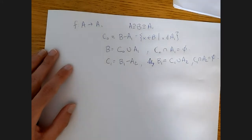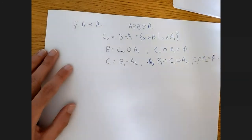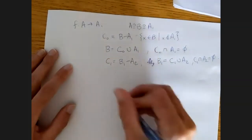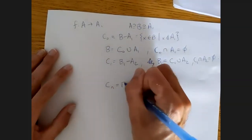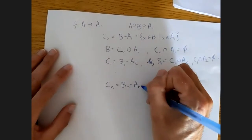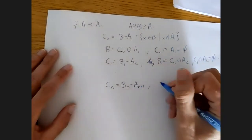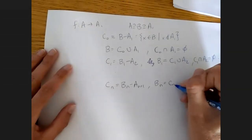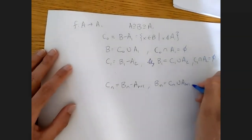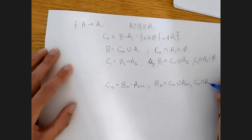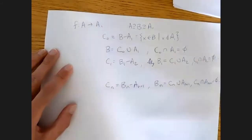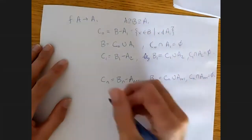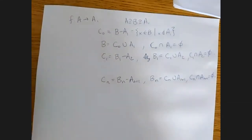And that keeps on going down forever and ever. So in general, we have cn equals bn minus an+1, and bn equals cn union an+1, where cn intersect an+1 is the empty set.